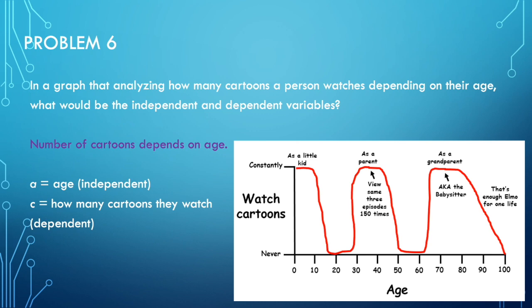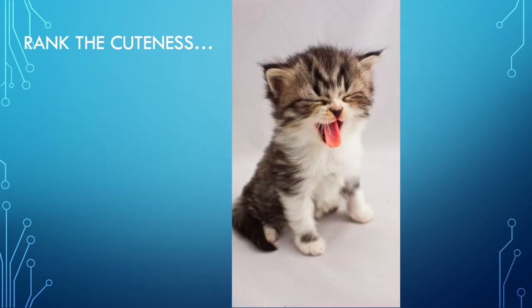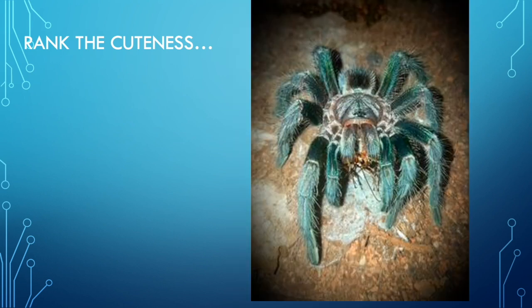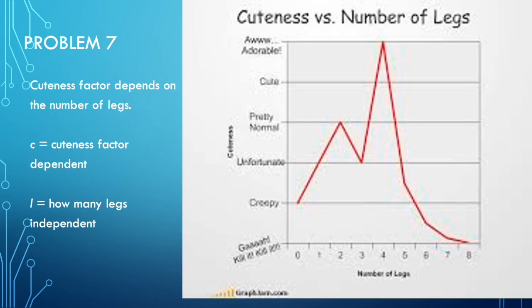Now I have some quick questions for you. In a graph that analyzes how cute things are depending on their number of legs, what would be the independent and dependent variables? The cuteness factor depends on the number of legs, at least in this example. So your cuteness factor is dependent and L, or legs, is independent.